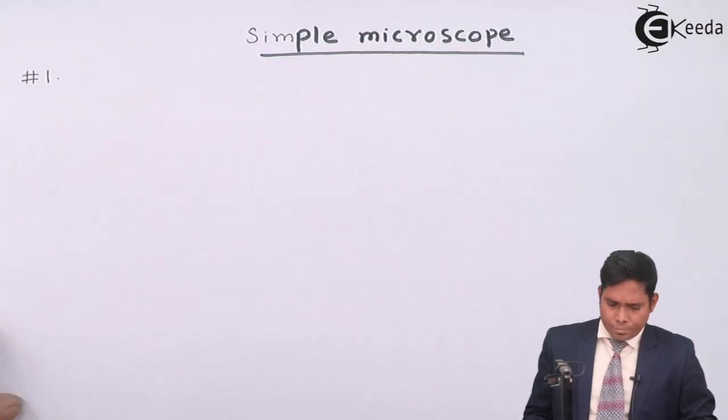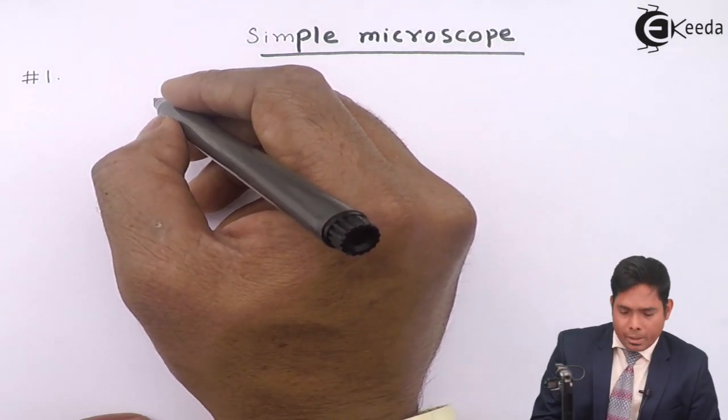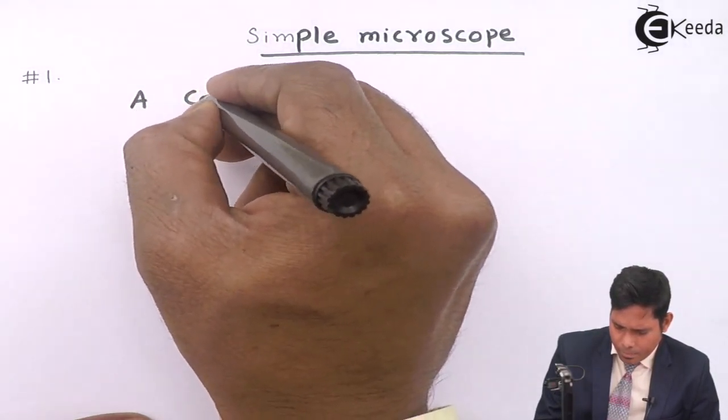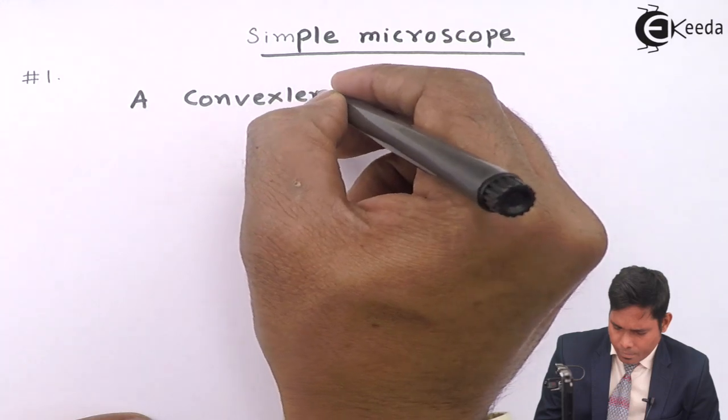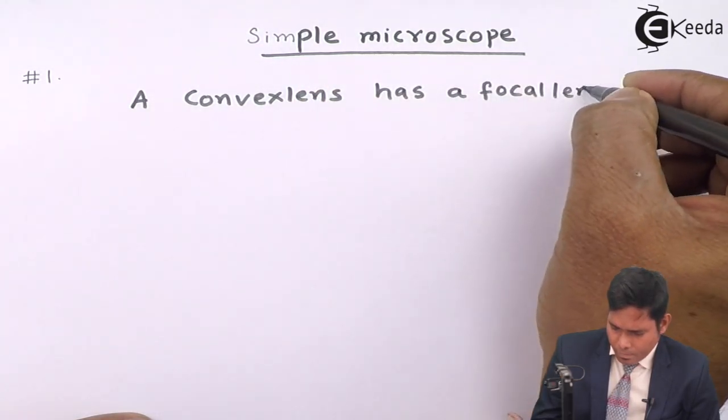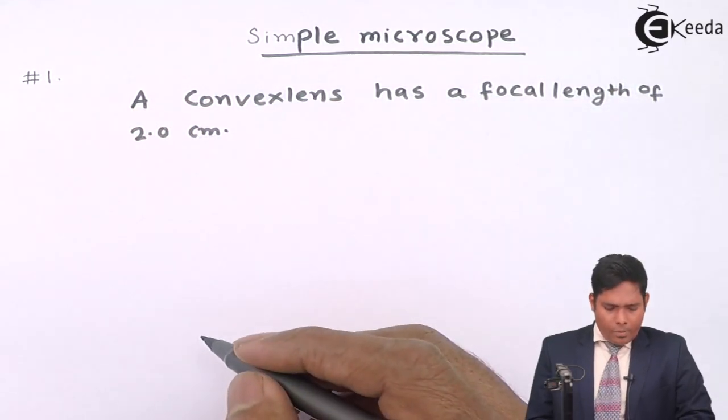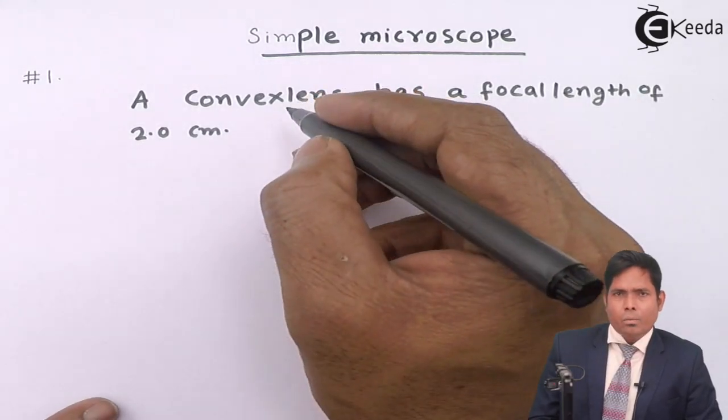Now, the question is: a convex lens has a focal length of 2 cm. Find its magnifying power if the image is formed at DDV.